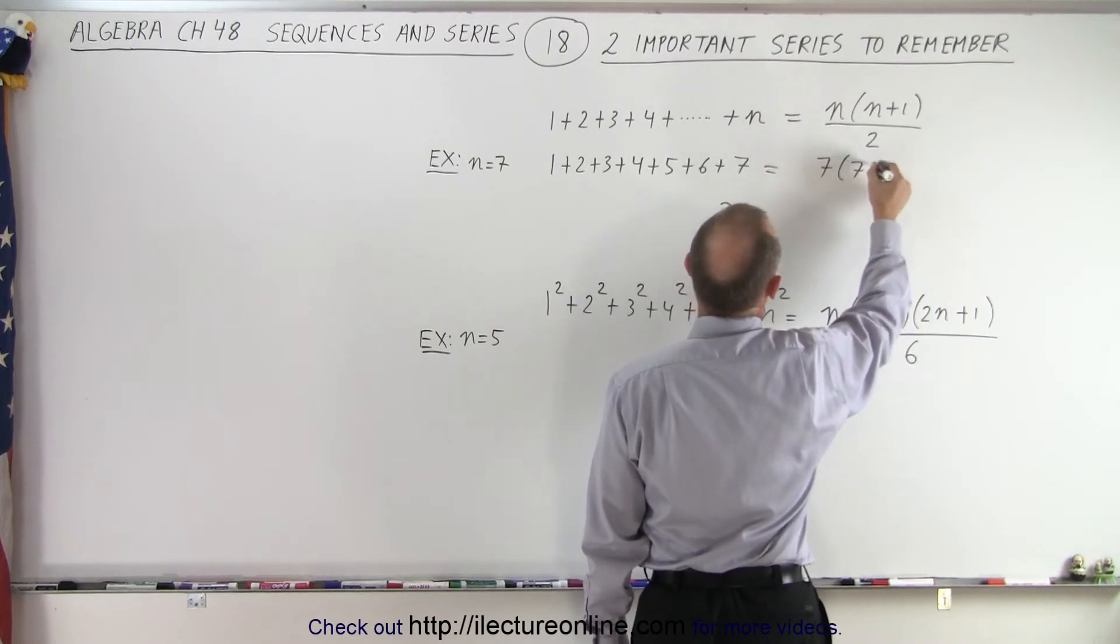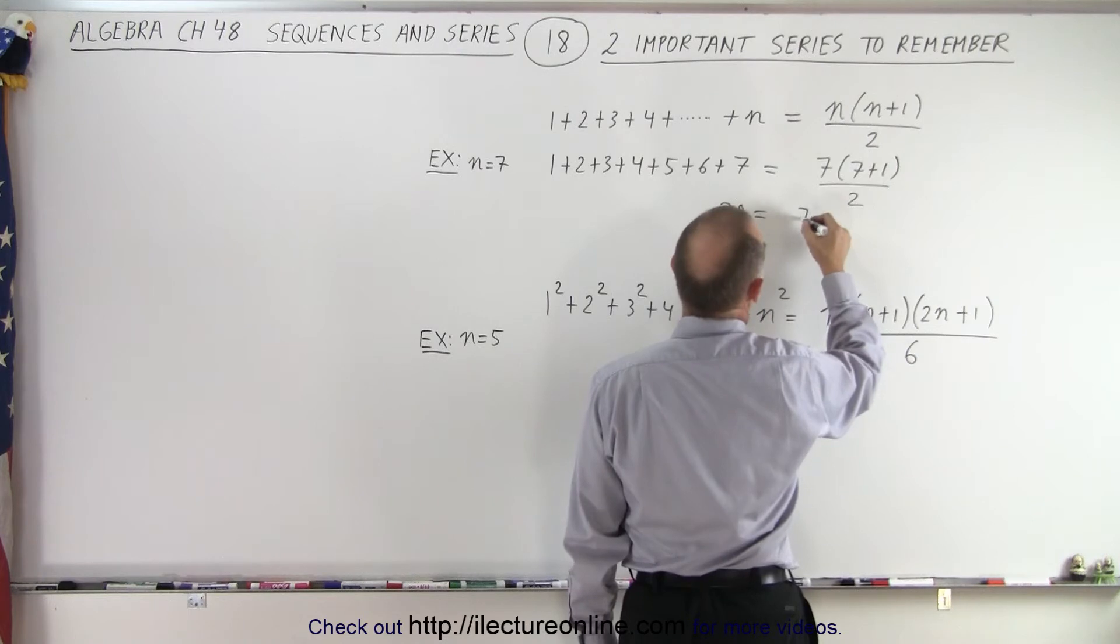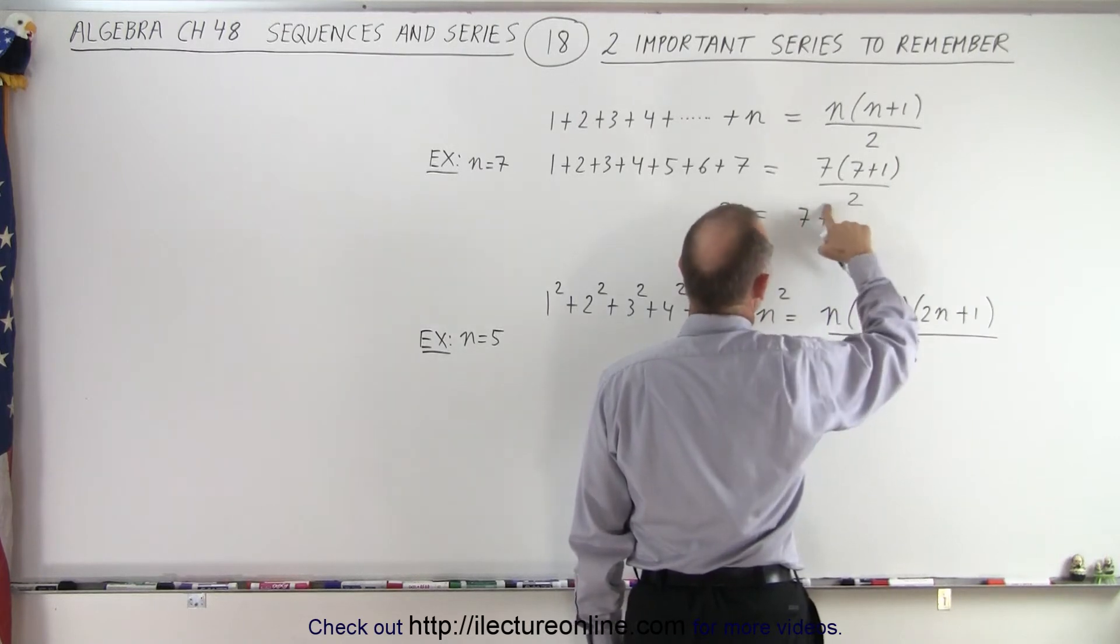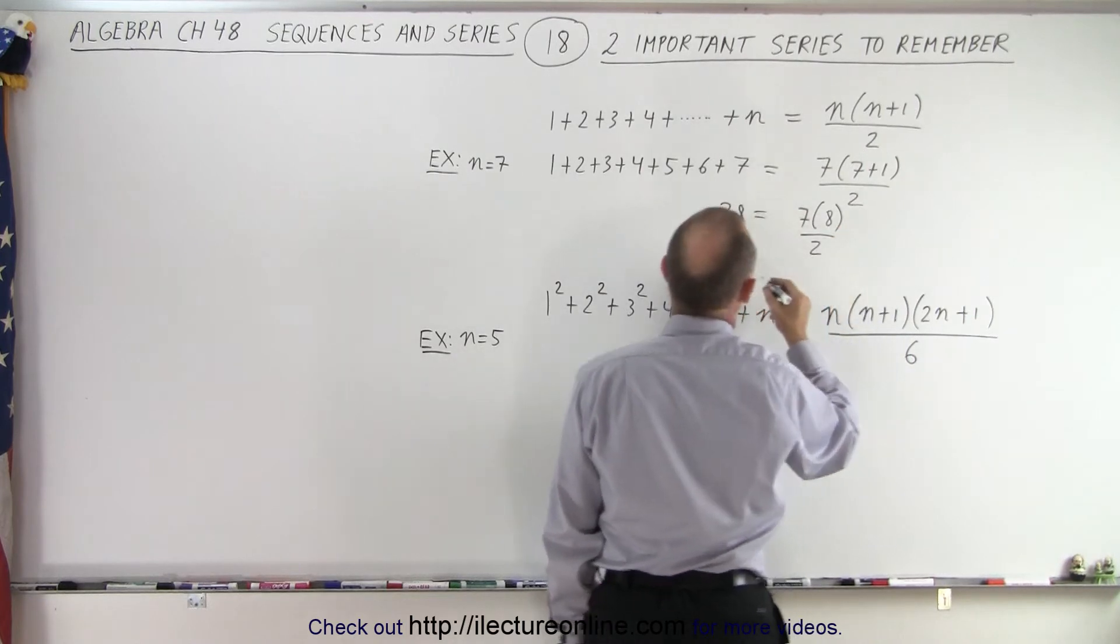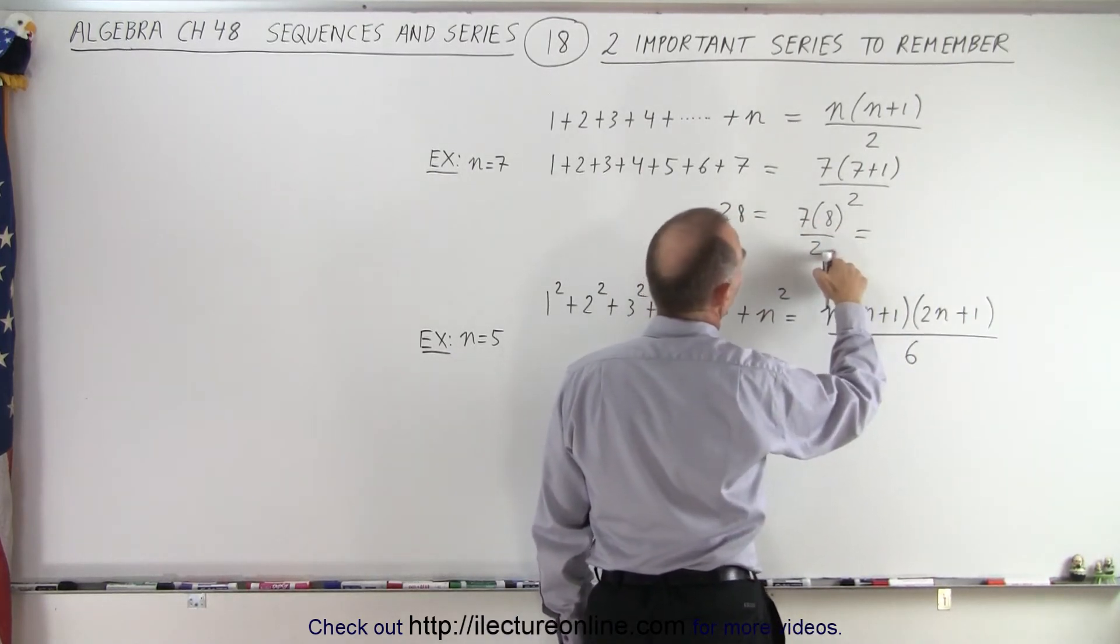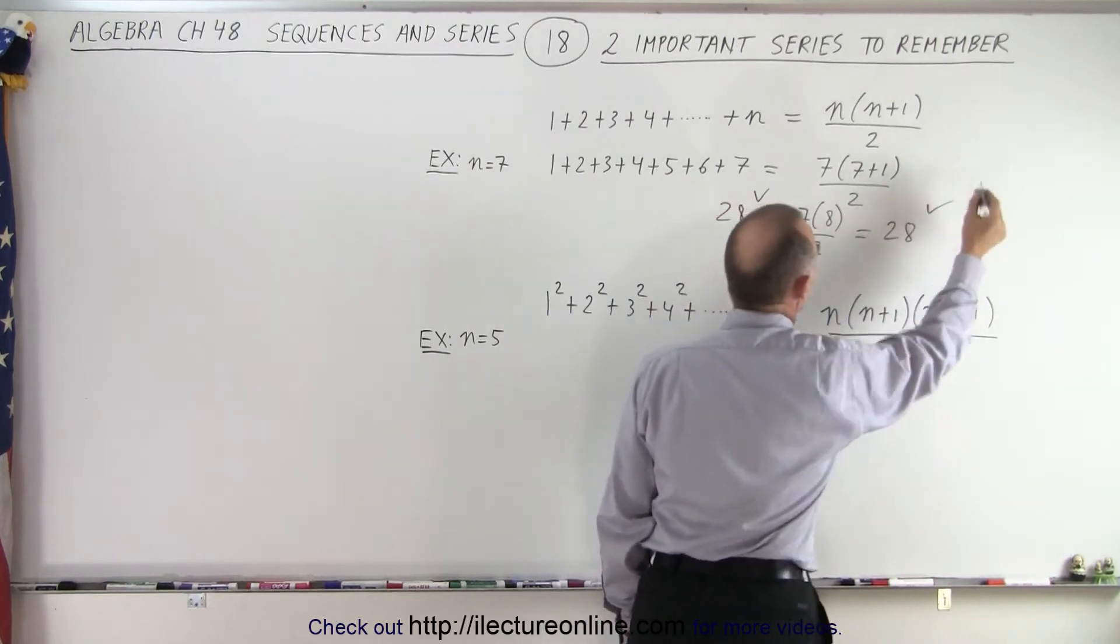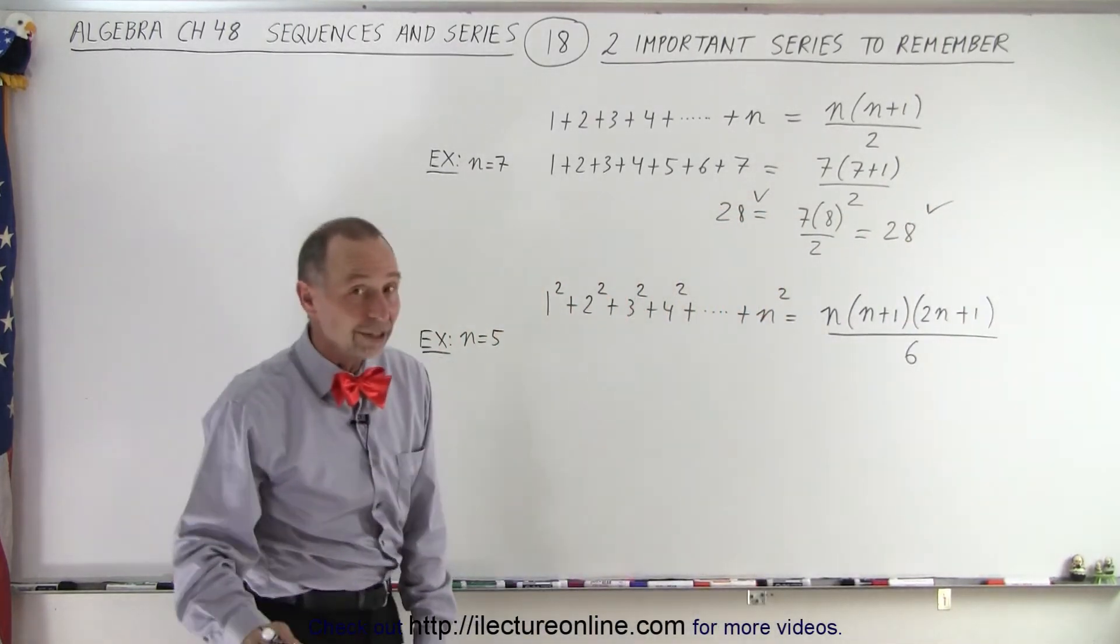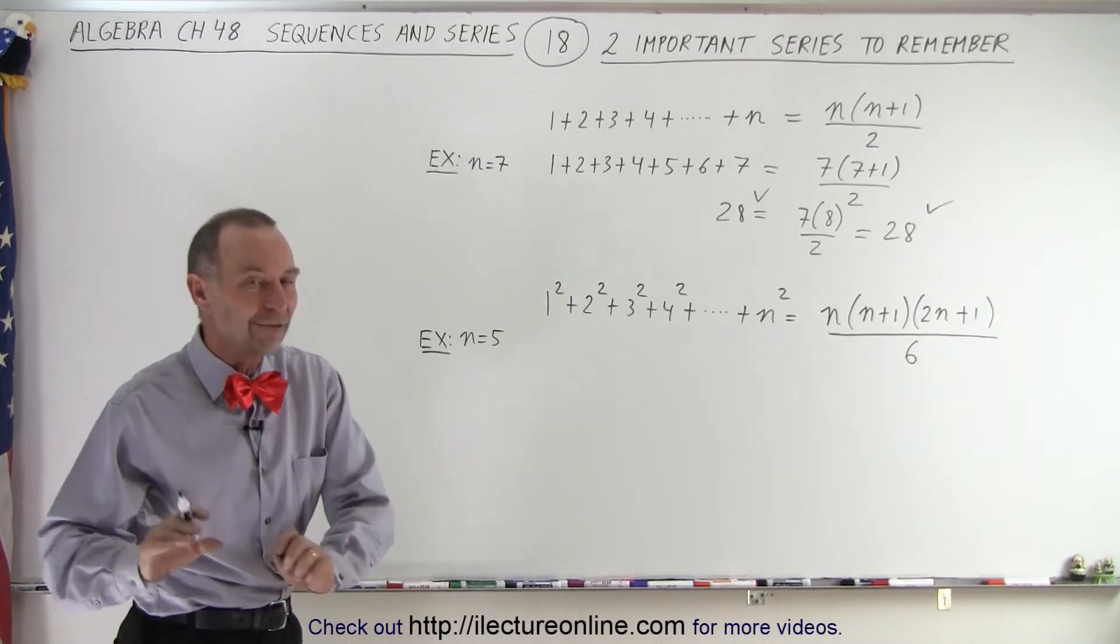So we'll let n equals 7. So this is 7 times 7 plus 1 divided by 2. Well this would be 7 times 8 divided by 2. And finally, this would be 56 divided by 2, which is indeed 28. So 28 equals 28. So it shows that at least for n equals 7 it works. You can try it; it will work for any value for n.